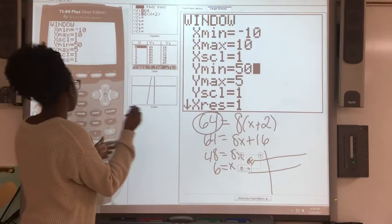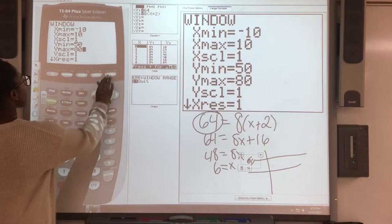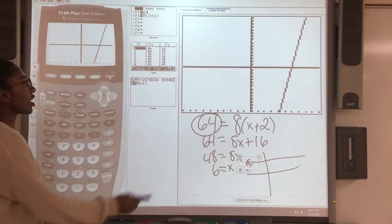And a value that's above 64 for your y max can just be 80. Then now when I click graph, there's my 64 and there's my other equation.